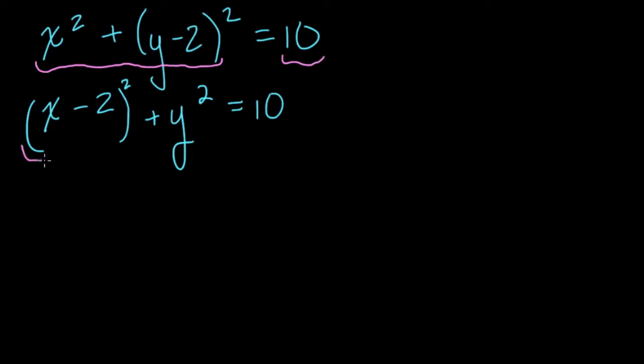And then down here we have (x-2) squared plus y squared also equals 10. So the transitive property tells us, if you have one expression equal to 10 and another expression equal to 10, then they must also be equal to each other, because they both equal 10.